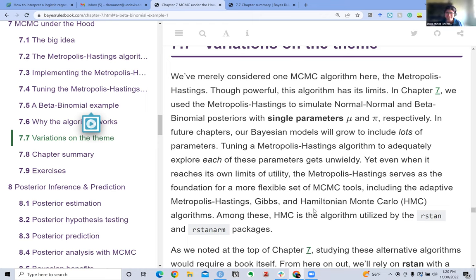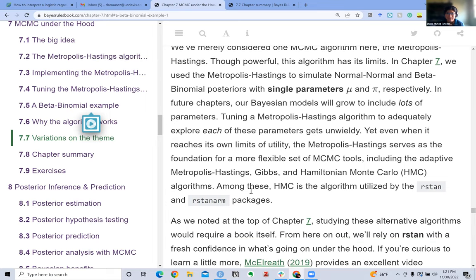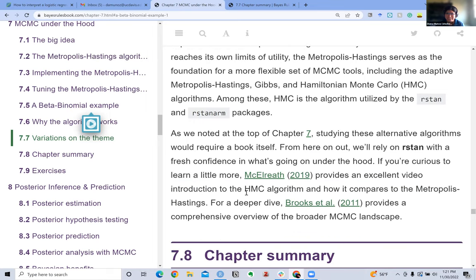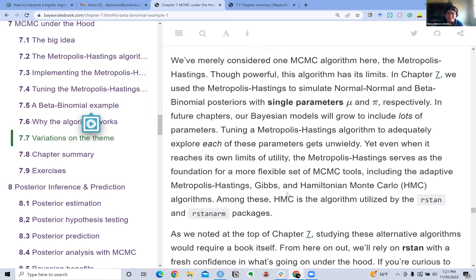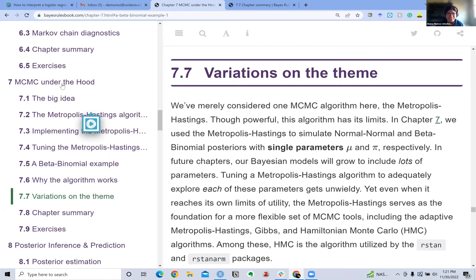Like the Gibbs and the Hamiltonian Monte Carlo. But that's what I wish they would have explained a little bit more instead of just going through how the algorithm works. I think it would have been good to know a bit more comparison between the different MCMC samplers. But I do feel like this chapter kind of explained a bit more what these algorithms are doing. So I feel like I could visualize it pretty well.